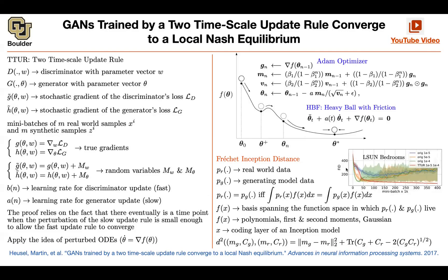You can see that the two-timescale update rule combined with Fréchet Inception Distance gives you the best results, and now we can actually compare things together in a quantitative fashion.